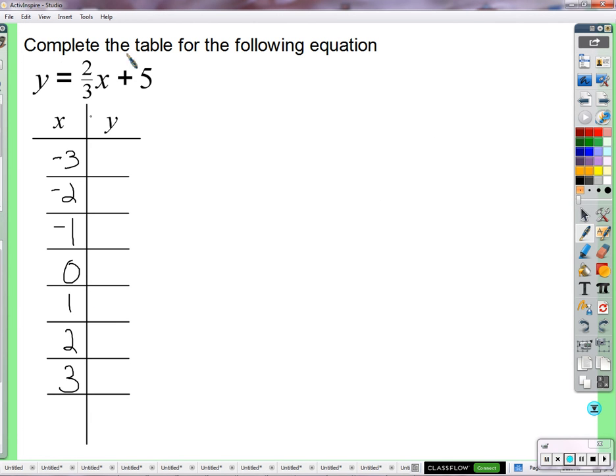So in this function, x is being multiplied by 2 thirds. So for the first example, we plug in a negative 3 for x. It might be easier to write this as negative 3 over 1. And when we multiply fractions, we multiply straight across. So we get negative 6, 2 times negative 3 is negative 6 over 3 plus 5.